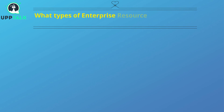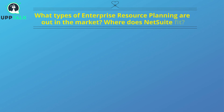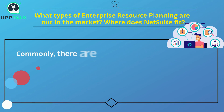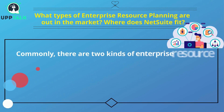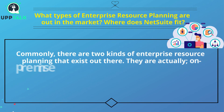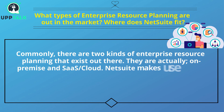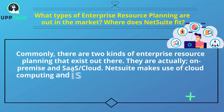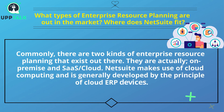What types of enterprise resource planning exist in the market, and where does NetSuite fit? There are two kinds of enterprise resource planning: on-premise and SaaS cloud. NetSuite makes use of cloud computing and is generally developed on the principle of cloud ERP systems.